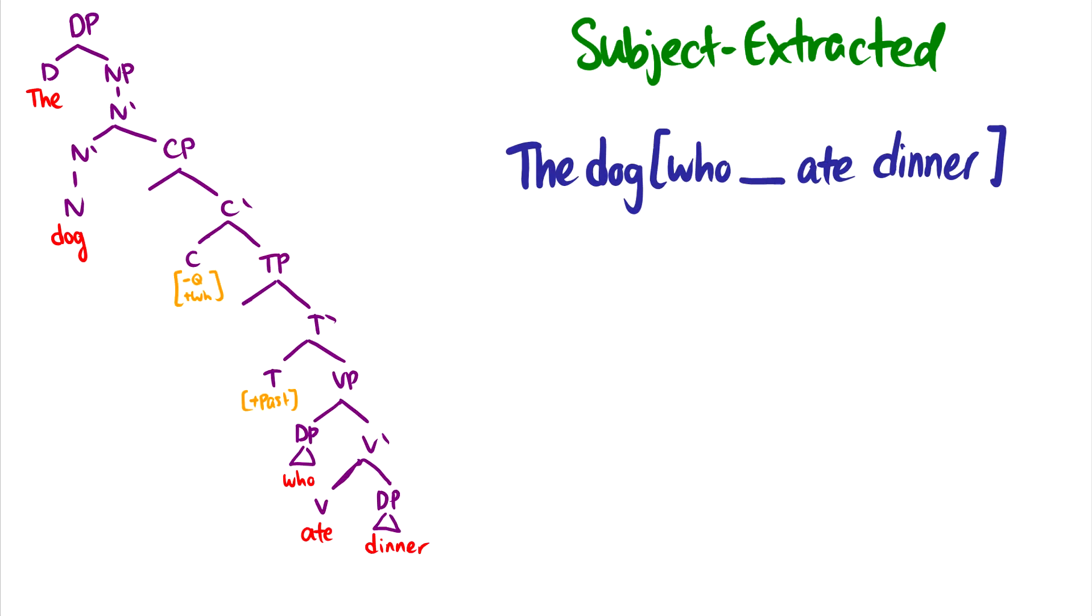Let's do some trees for these. Let's start with the dog who ate dinner. The first thing we notice with these relative clauses is that we have CPs being adjuncts in NPs. The dog who ate dinner. So this is a CP inside an NP because it's modifying dog.